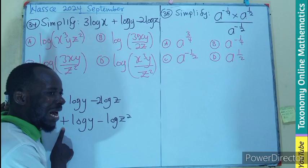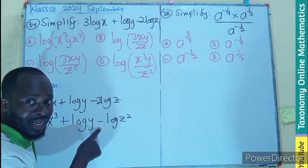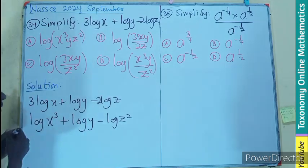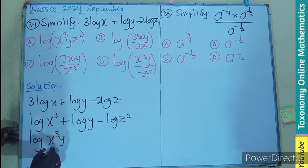Now in addition, we pick multiplication. In division, subtraction, we pick division, meaning the log of x exponent 3 multiplied by y divided by z squared.